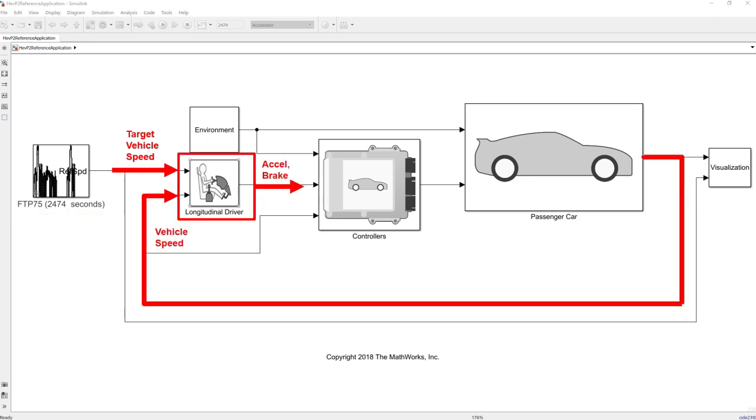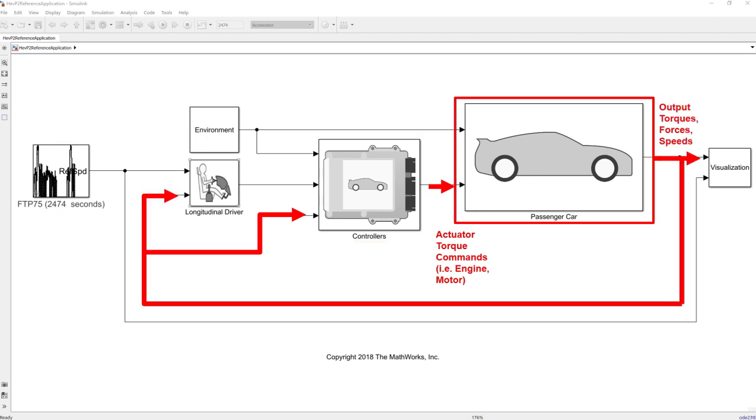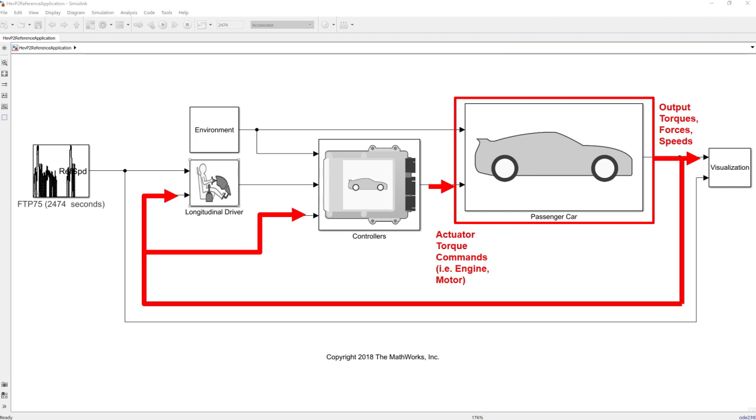Next, a virtual driver model generates accelerator and brake pedal signals based on the vehicle target and feedback speeds. Controllers for the powertrain system use the accelerator and brake pedal signals, along with other system feedback signals, and output torque commands to the actuators in the system, for example, the engine or motors. The controller commands go to the vehicle system, where physical models of the engine, electrical system, such as the motors or batteries, and drivetrain dynamically output torques and forces to move the vehicle. And there is a visualization system, which displays the dynamic signals during the simulation.